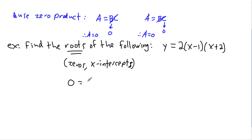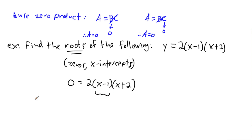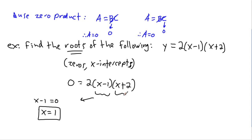So for our example, y equals 2 times (x minus 1) times (x plus 2), a root means I set y equal to zero: 0 equals 2 times (x minus 1) times (x plus 2). We've got three factors here. The 2 is just a number — I can't change it. So I set each variable factor equal to zero. Taking (x minus 1) equals zero, x equals 1 is the first answer.